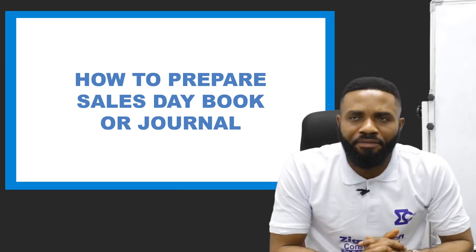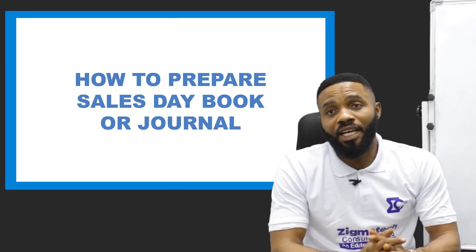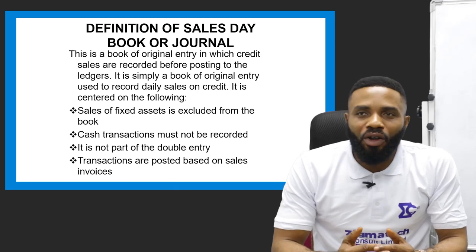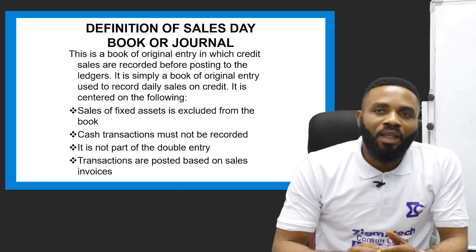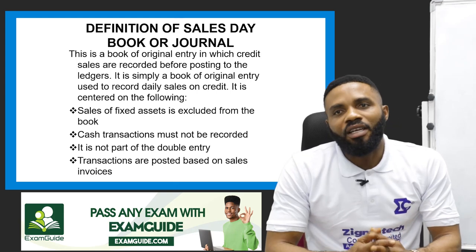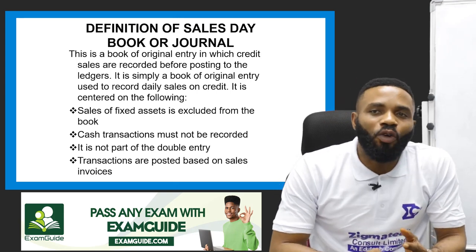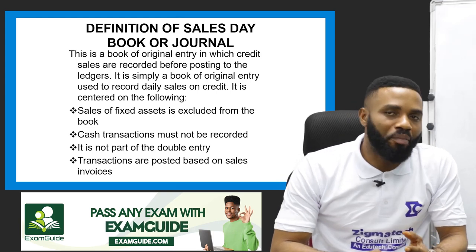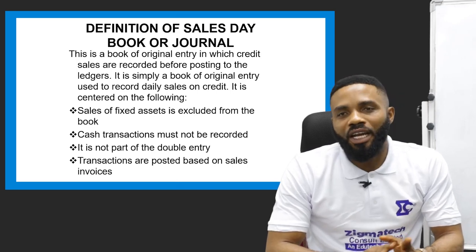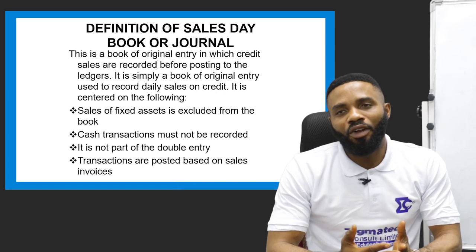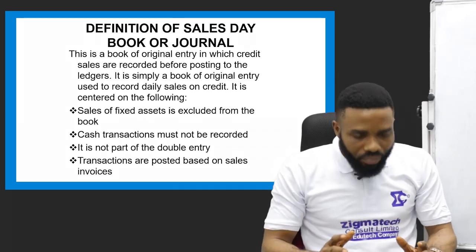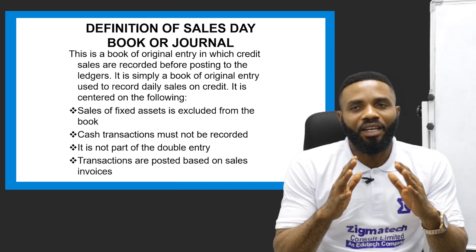Let's look at the definition of what a sales day book or journal looks like. It is a book of original entry in which credit sales are recorded before posting to the ledgers. It is simply a book of original entry used to record daily sales on credit. It is centered on the following key rules: number one, sales of fixed assets are excluded from the book; number two, cash transactions must not be recorded.